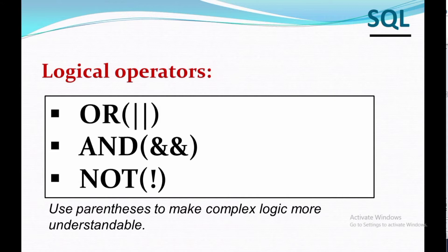Here we will discuss three of them: OR, AND, and NOT. We should use parentheses to make our complex logic more understandable. They return true or false to combine one or more true-false values and return a result set. Sometimes we need to compare two or more logical expressions in a statement. In such circumstances, we use logical operators.